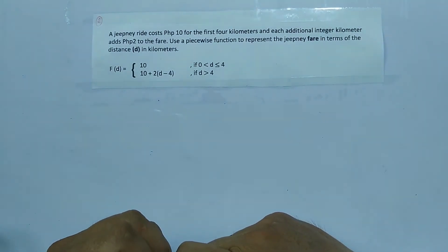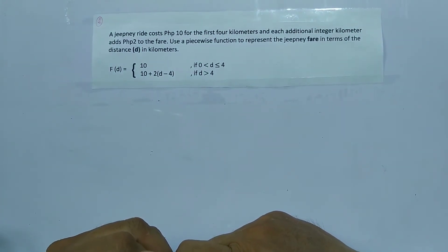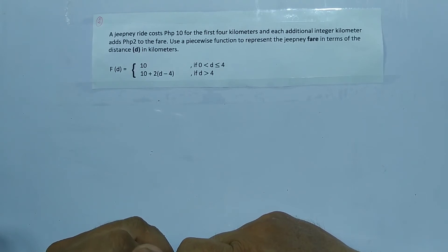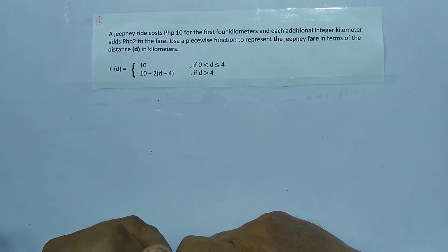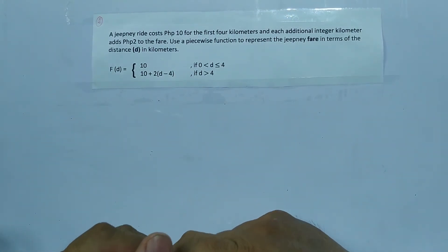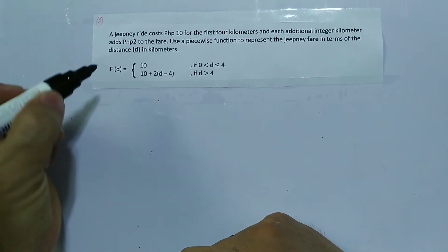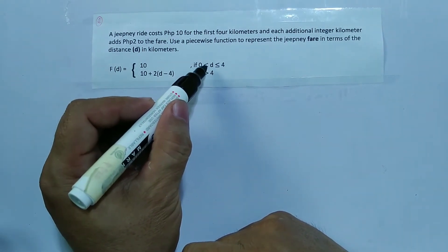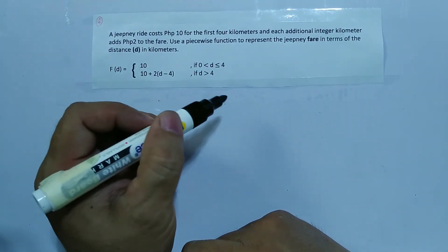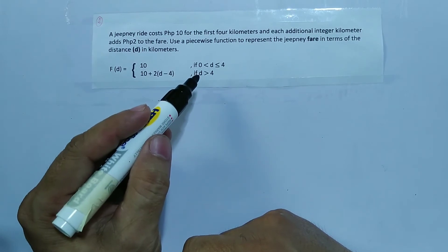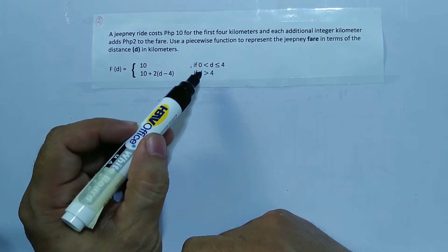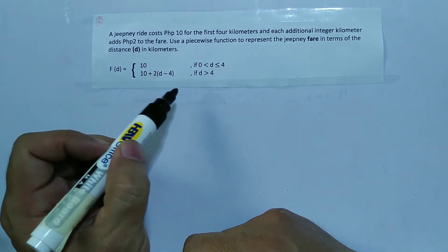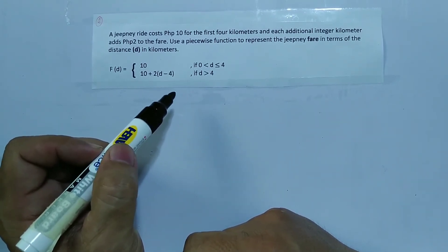Let's have the second problem. A jeepney ride costs 10 pesos for the first 4 kilometers, and each additional integer kilometer adds 2 pesos to the fare. Use a piecewise function to represent the jeepney fare in terms of distance d in kilometers. The first sub-function is f(d) = 10 if d is greater than zero but less than or equal to 4, meaning for the first 4 kilometers — from 1 kilometer up to 4 kilometers — you will pay 10 pesos, which also serves as your minimum fare.